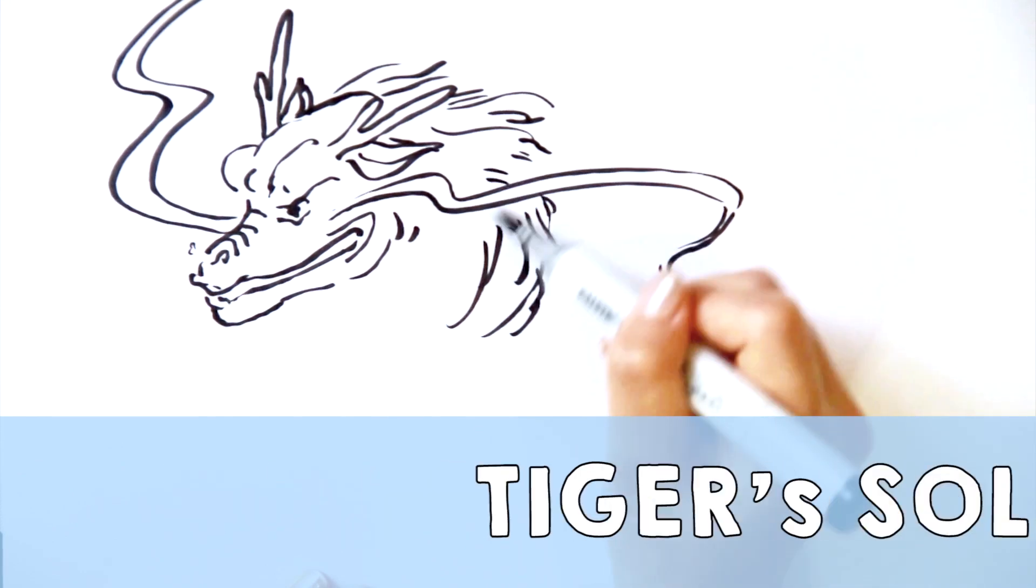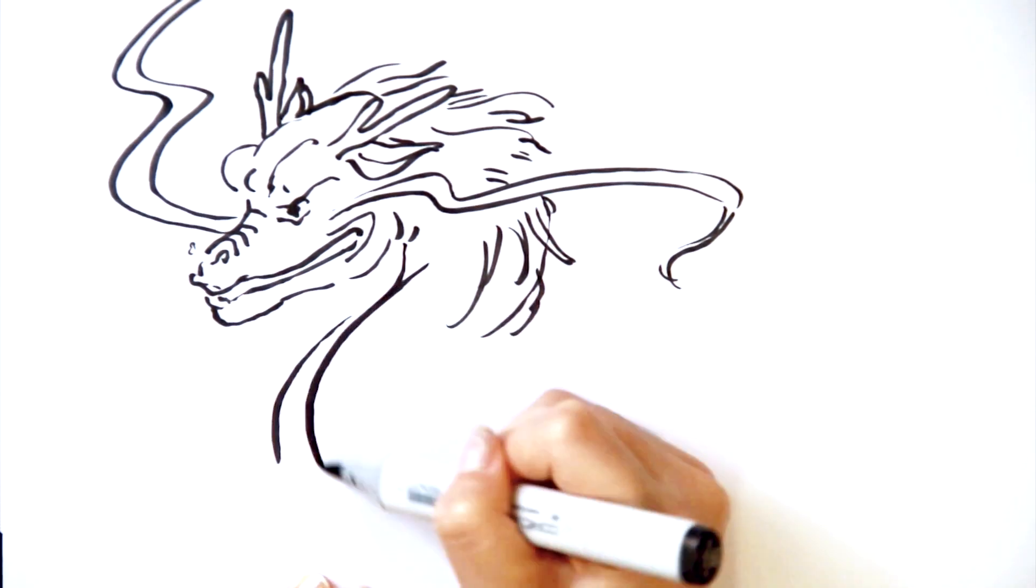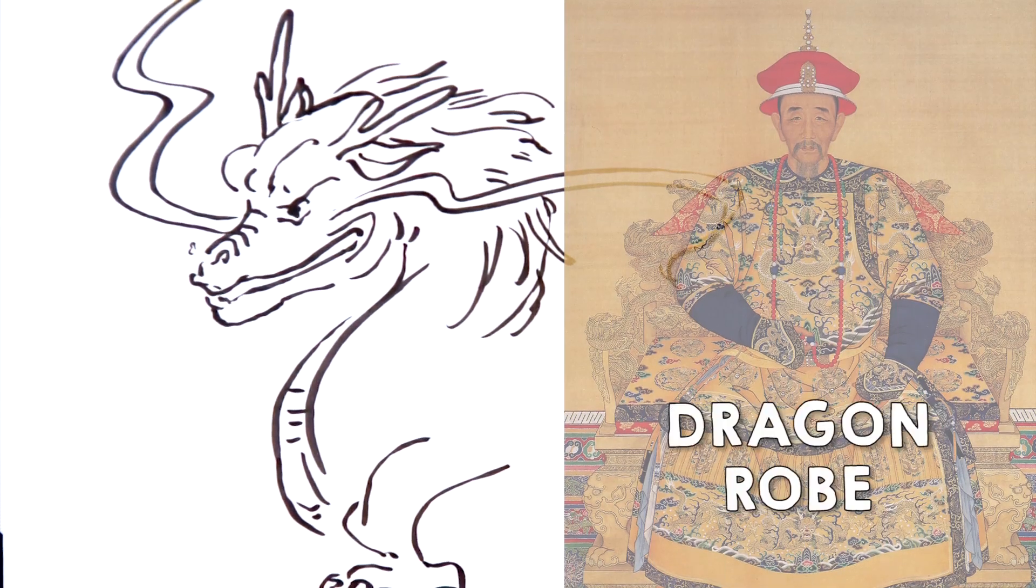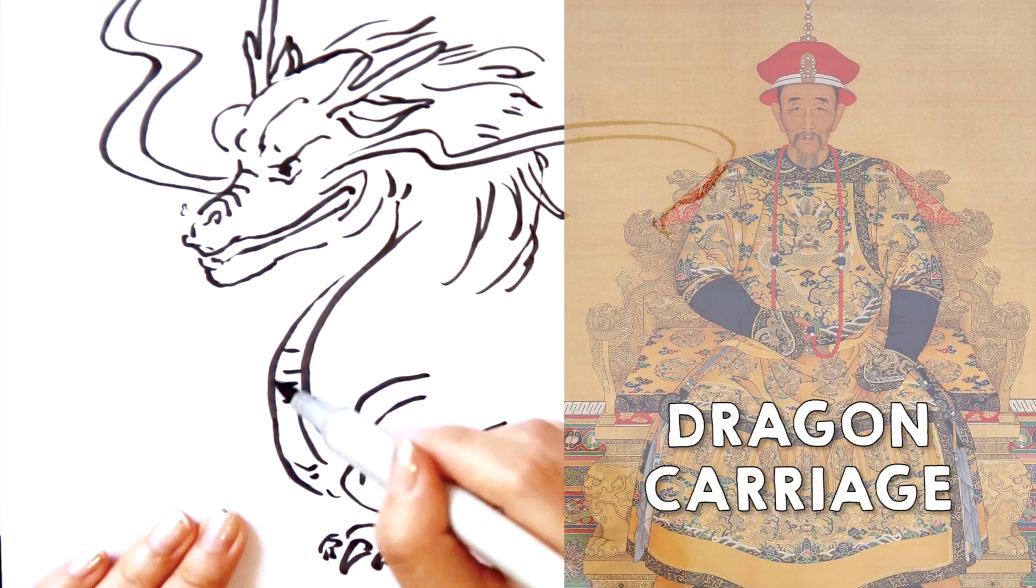Three thousand years ago, during the Zhou dynasty, the five-claw dragon became the emperor symbol, and things that belonged to the emperor have names like dragon rope, dragon throne, and dragon carriage.